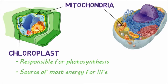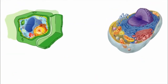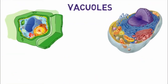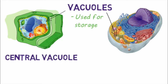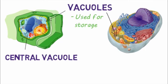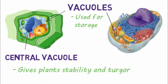Both plant cells and animal cells have vacuoles, which are used for storage in the cell. However, only plant cells have a large central vacuole that contains mostly water. It's this central vacuole that gives plants their stability and turgor.